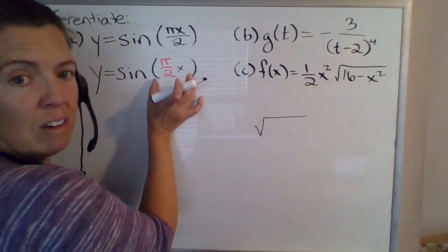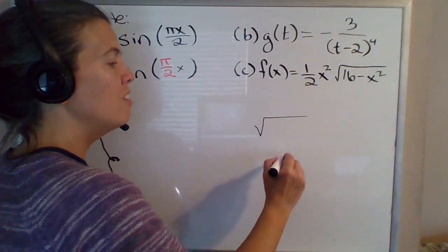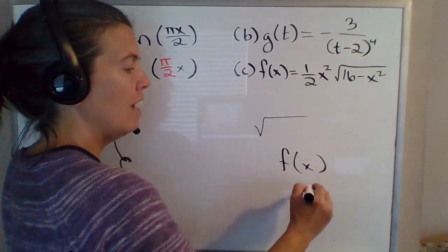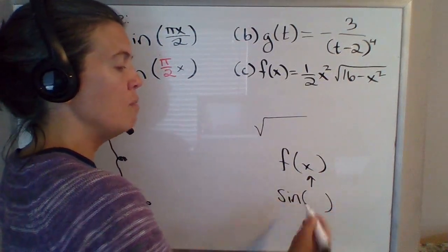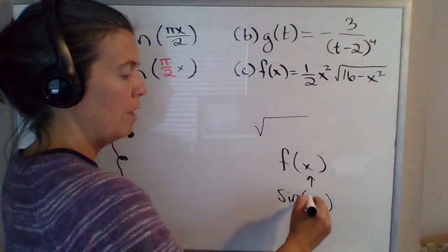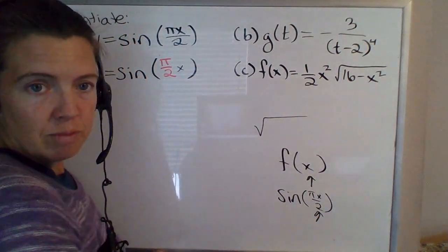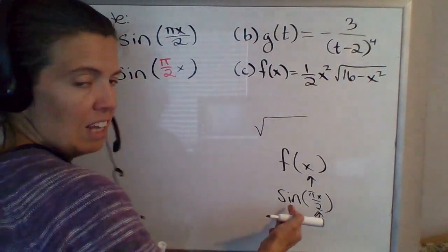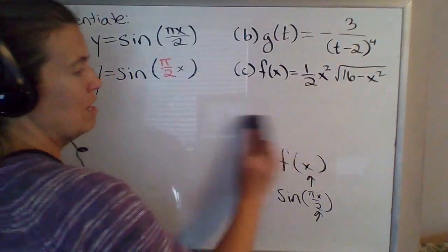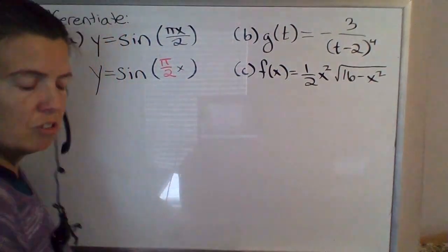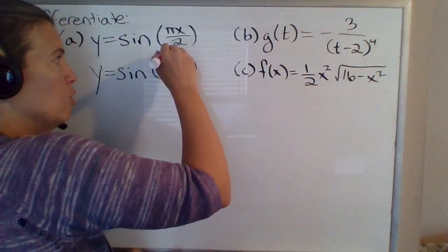The parentheses here — whatever's in the parentheses — is inside of the sine function. It's like when you write f(x), and x is being plugged into the function f. The sin is just the name of that function, and whatever you put here — in this case πx/2 — is being plugged into the sine function. I know I'm going on about that, but it's a common mistake for Calc 1 students. So the inside function is the πx/2.